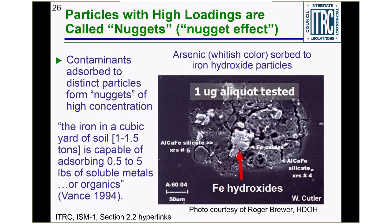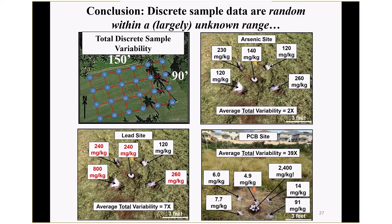The conclusion — and this can be a shock to those of us who were doing discrete sampling for years — is that discrete sample data are completely random within an unknown range. For the arsenic site, combining variability within and between co-located samples, we see a variability of about twofold around any given point. For the lead-contaminated site, average variability is sevenfold. For the PCB-contaminated site, average variability of co-located samples is 39-fold — well over an order of magnitude.